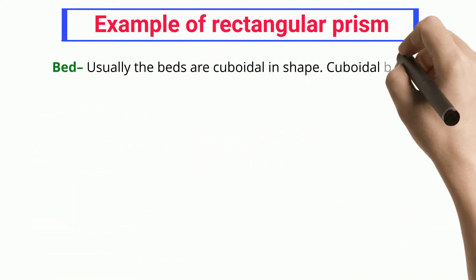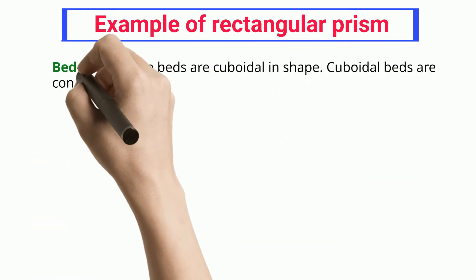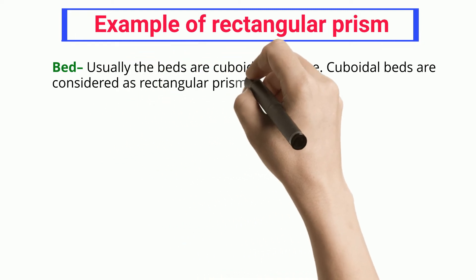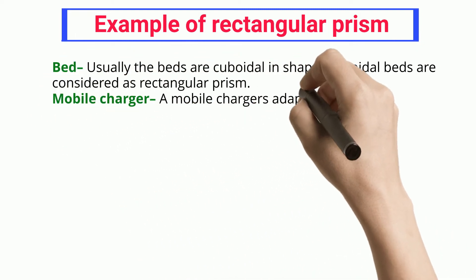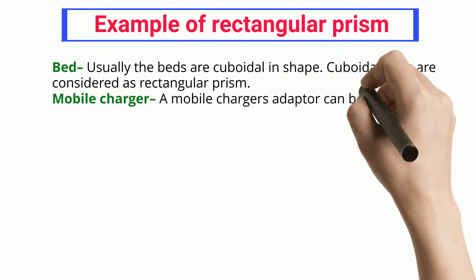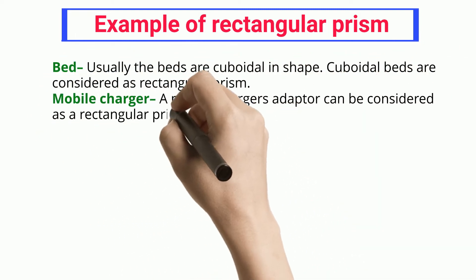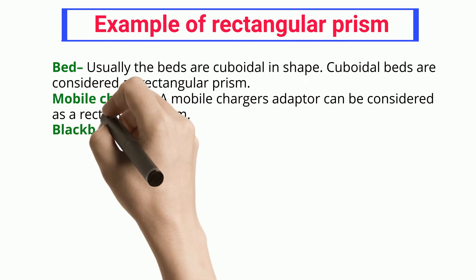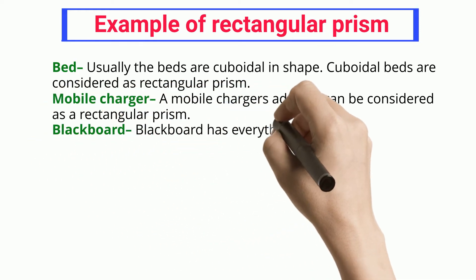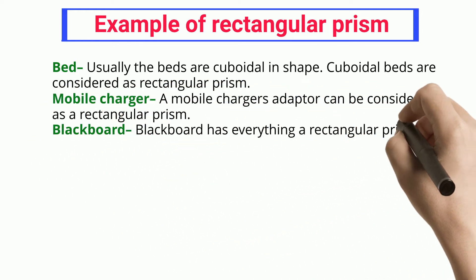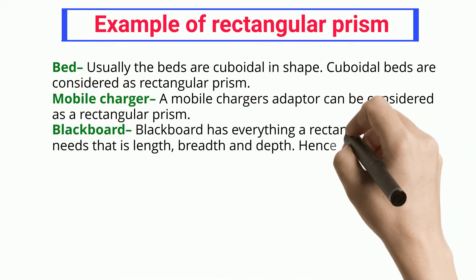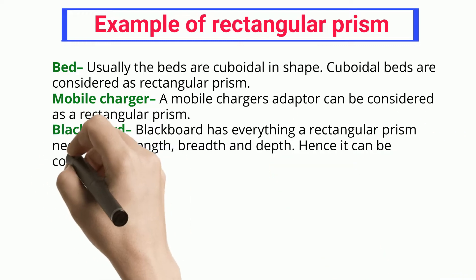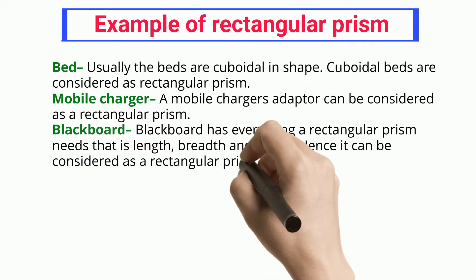Bed: usually beds are cuboidal in shape, and cuboidal beds are considered as rectangular prisms. Mobile charger: a mobile charger's adapter can be considered as a rectangular prism.